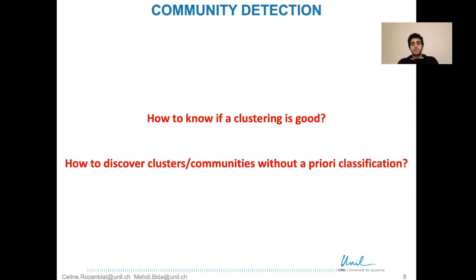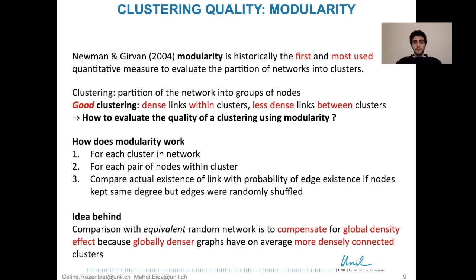So the question beyond visual inspection is: how can we know if a clustering is good or not? And if we do not have a prior classification of nodes into clusters or communities, how can we discover communities? Modularity is historically the first and is still the most used quantitative measure to evaluate the partition of networks into clusters. We recall that a clustering is a partition of the network into groups of nodes, and a good clustering is one in which links are dense within clusters and less dense between clusters.